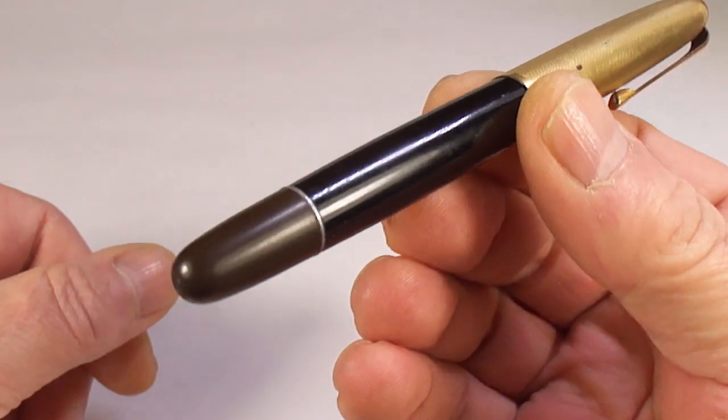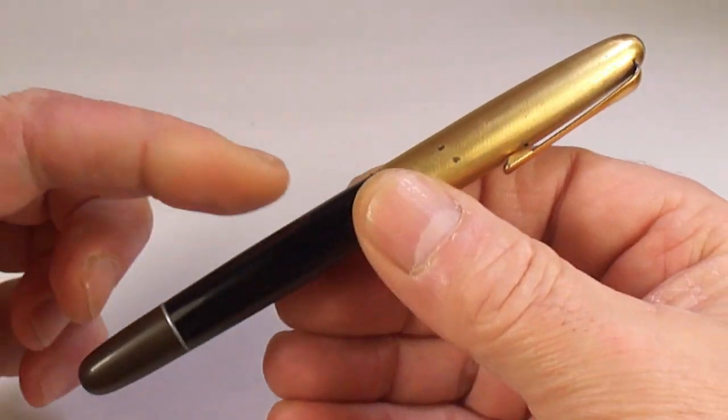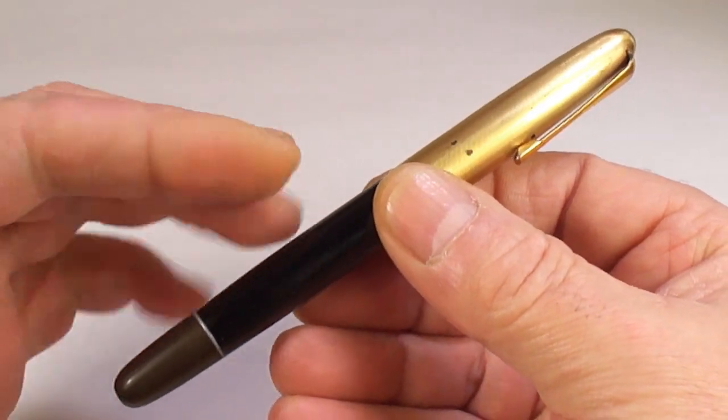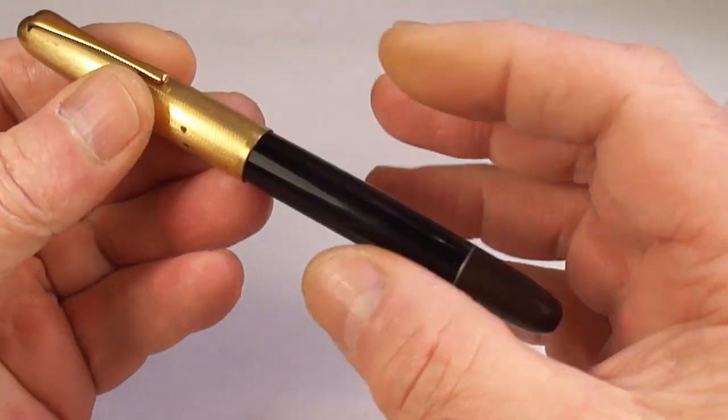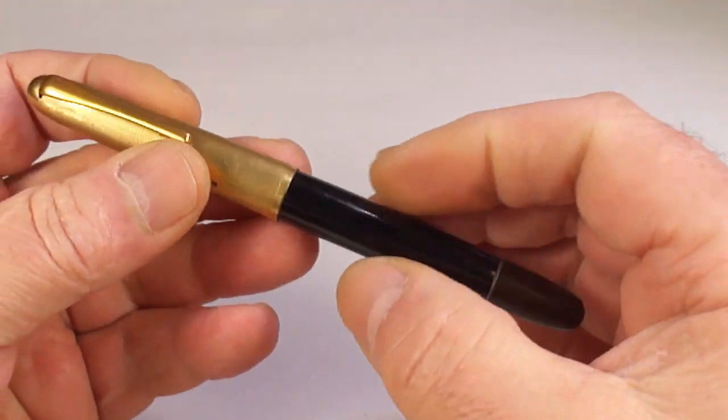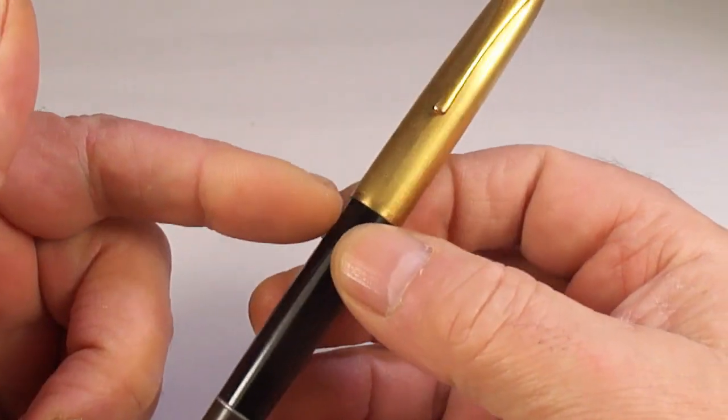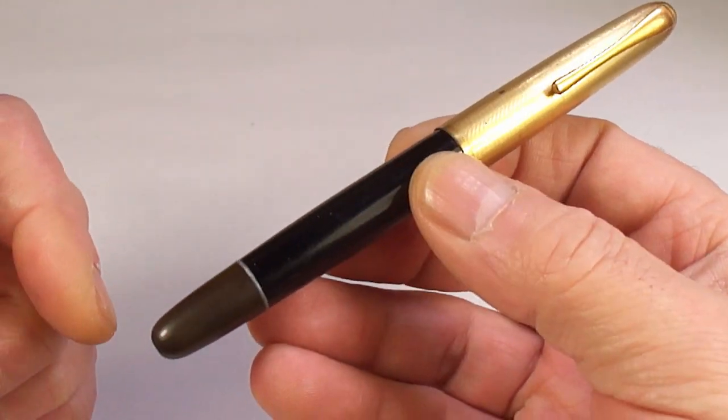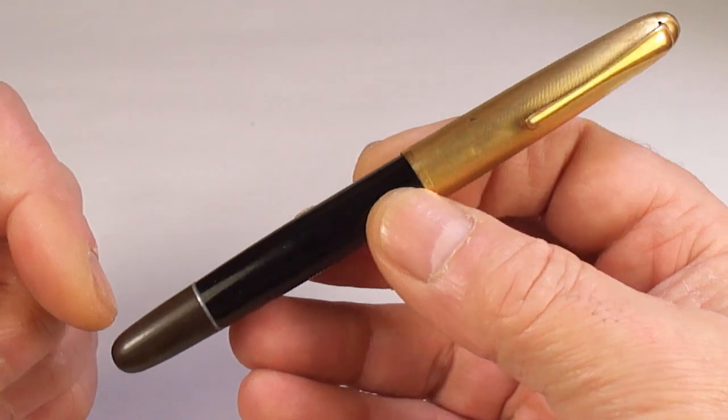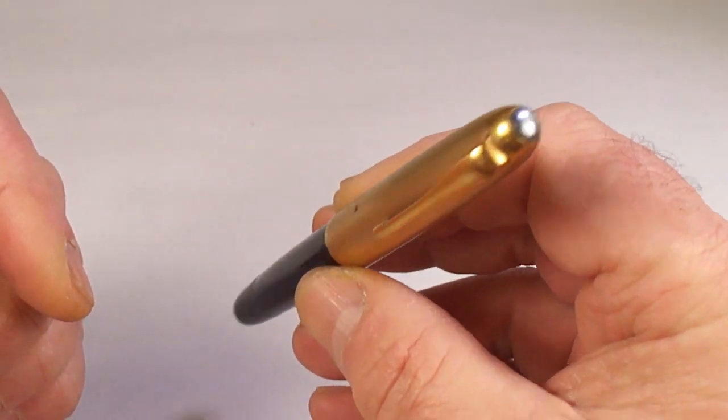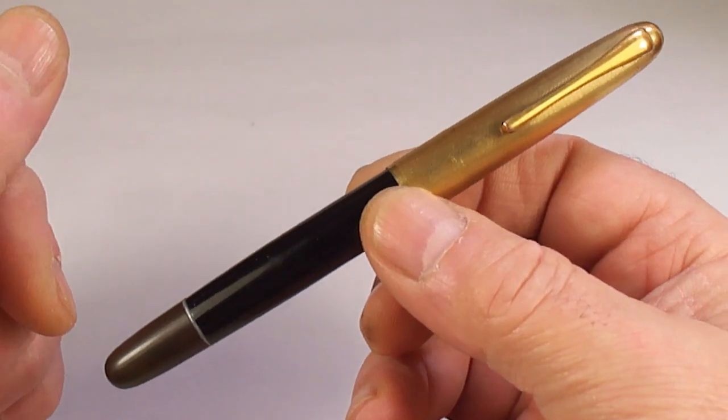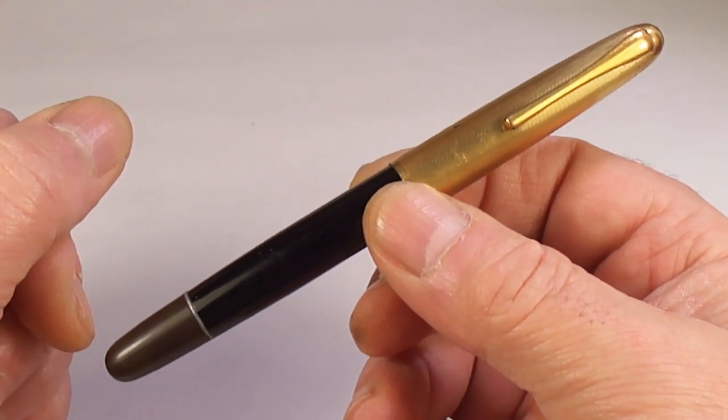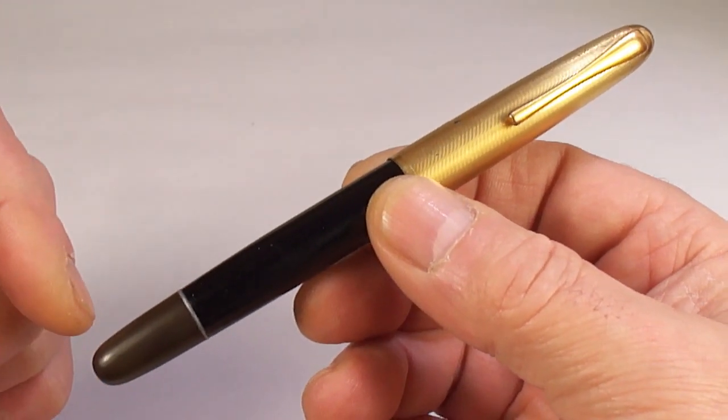What I'm going to do is show you the pen before, and then what we'll do is fully disassemble the pen, clean the inside of the barrel, and put new seals in the piston filler inside. Then I'll come back and show you the pen once it's finished and do a quick review on it.